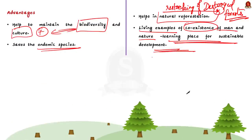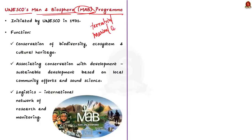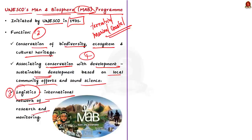Because of these advantages, UNESCO has a separate international recognition program for biosphere reserves — the UNESCO Man and Biosphere (MAB) program. Biosphere reserves under this program are defined as areas of terrestrial and coastal or marine ecosystems internationally recognized within the framework of UNESCO's MAB program. The program was initiated by UNESCO in 1971 and has a three-fold function: conservation of biodiversity, ecosystems, and cultural heritage; associating conservation with sustainable development based on local community efforts and sound science; and logistics through an international network of research and monitoring.